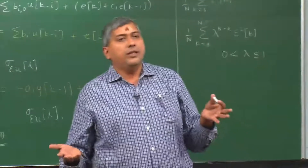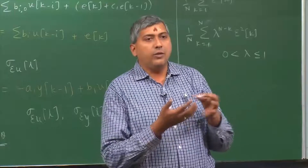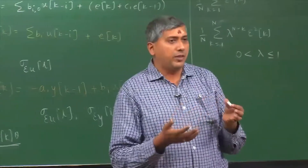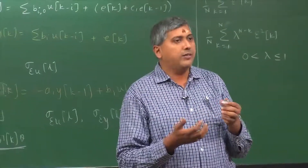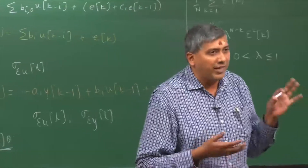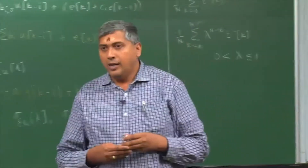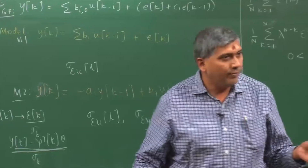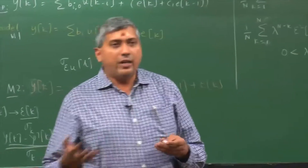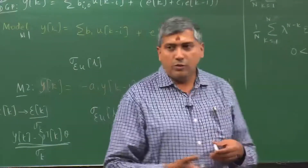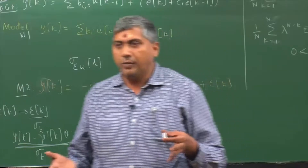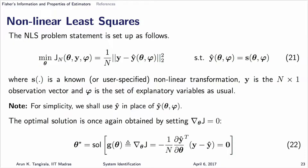What you end up with in linear least squares is: when you differentiate the objective function with respect to parameters, you get a set of linear equations — that is why you have a unique solution. Whereas with non-linear equations, as the bottom equation shows, you end up with a bunch of non-linear equations, and finding a unique solution to those is not a trivial problem. That is why you have to turn to non-linear optimizers.